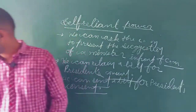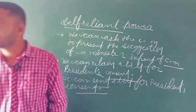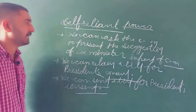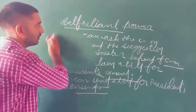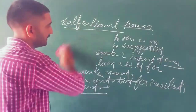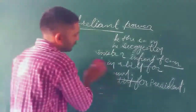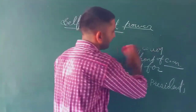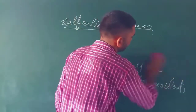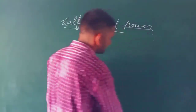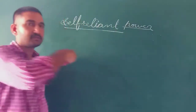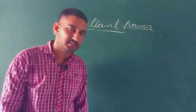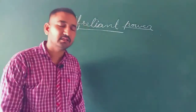Along with that, it is also the self-reliant power of the governor that while issuing an ordinance, it is completely depending on the governor whether he asks for the consent, the assent, or the advice of the President.